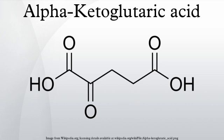Alpha-ketoglutarate can be produced by oxidative decarboxylation of isocitrate by isocitrate dehydrogenase, or by oxidative deamination of glutamate by glutamate dehydrogenase. Alpha-ketoglutarate can also be used to produce ornithine via alpha-ketoglutarate pathways.